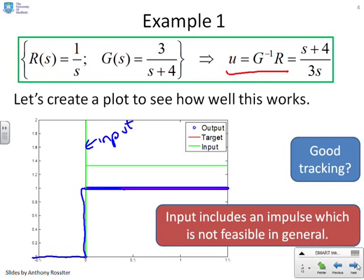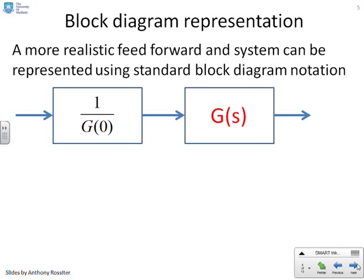A more realistic feedforward: we've got a signal R which is the target, a signal U going into the process which is the input, and an output X. There's a relationship between the signal U and the target R. If you want something more realistic that will not ask you to produce signals you can't actually implement, something like 1 over G of zero will do what you want. That gives you the inverse of the steady-state gain. Clearly, in the steady state, this will give you the desired target.